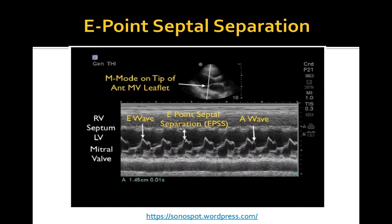M-mode is used to document and measure the degree of mitral valve excursion, known as the E-point septal separation. To obtain this measurement, the M-mode cursor is placed over the tip of the anterior mitral leaflet. As the mitral valve moves during diastole, the M-mode tracing reveals a characteristic pattern of two repeating waves. The first is the E-wave, which reflects the initial and maximal opening of the valve to allow passive filling of the left ventricle. Immediately following is the A-wave, which is usually smaller and corresponds to left atrial contraction.